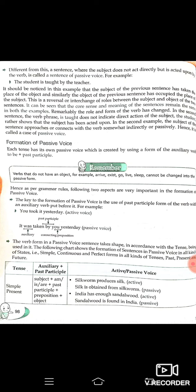Different from the active sentence, here the subject does not act directly but is acted upon by the verb. This sentence is called passive voice. It should be noticed that the subject of the previous sentence has taken the place of the object and similarly the object of the previous sentence has occupied the place of the subject.